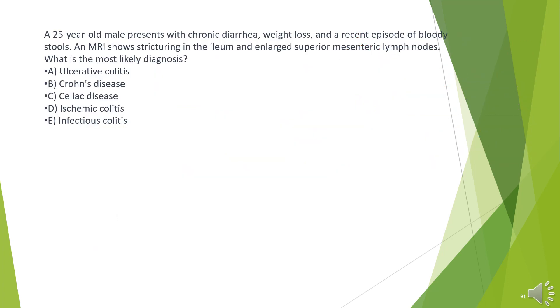A 25-year-old male presents with chronic diarrhea, weight loss, and a recent episode of bloody stools. An MRI shows stricturing in the ileum and enlarged superior mesenteric lymph nodes. What is the most likely diagnosis?